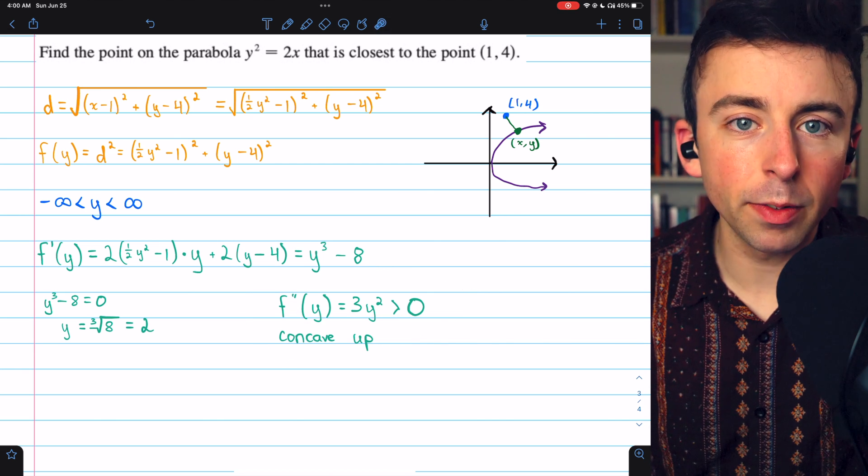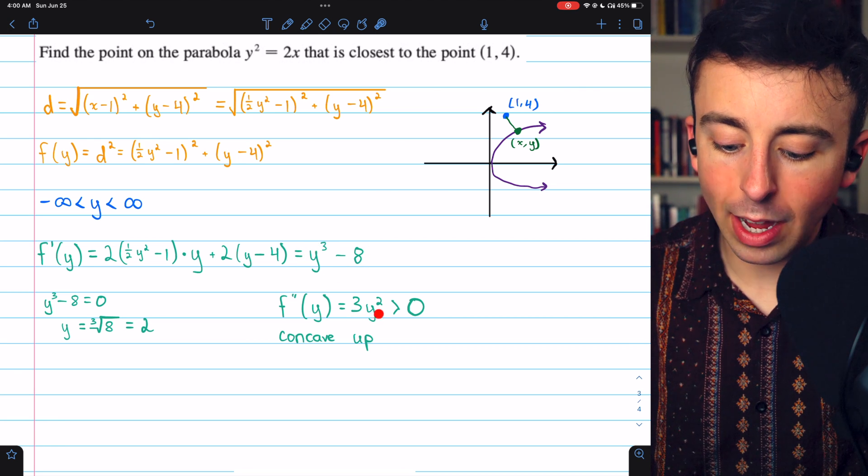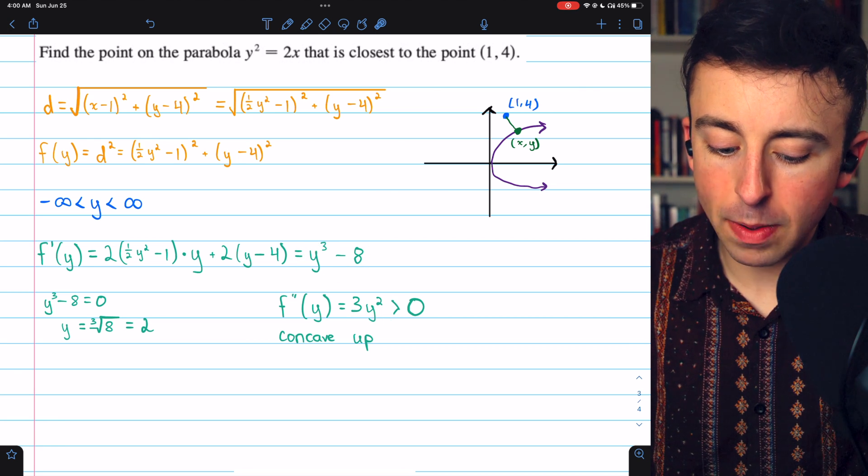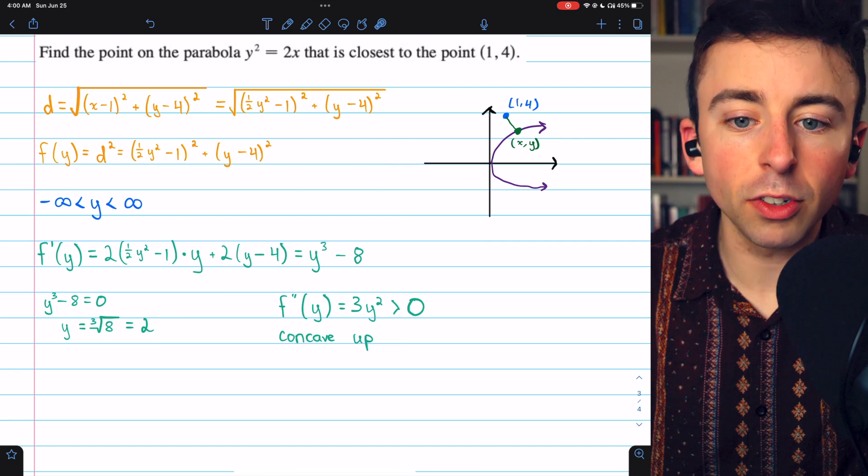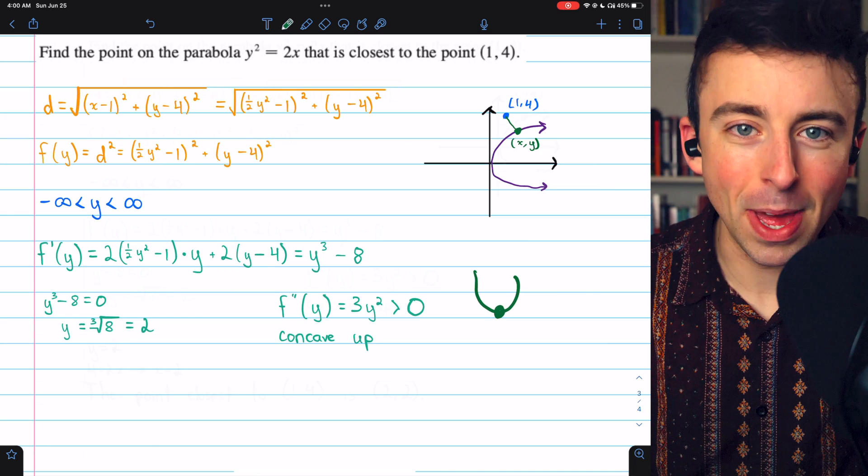If we take the second derivative to assess the concavity, the second derivative is 3y squared, which is going to be positive at y equals 2. Thus the function is concave up, and so indeed we've found us a minimum.